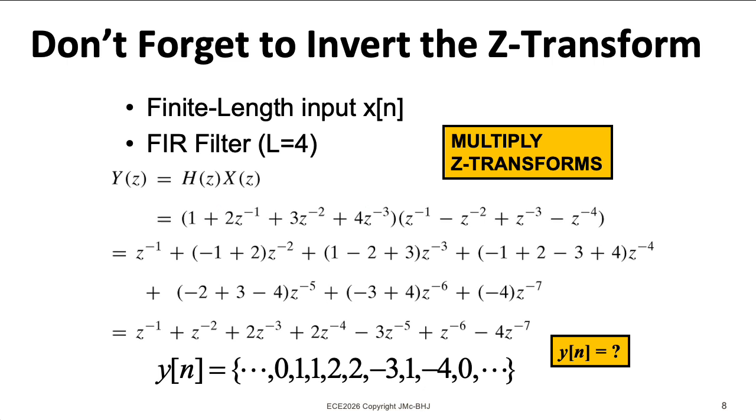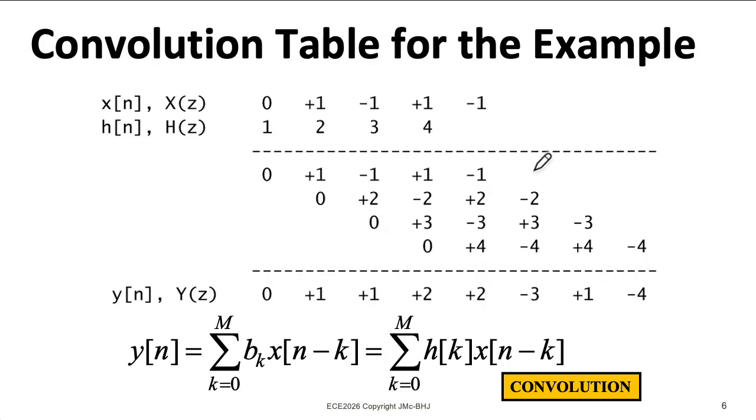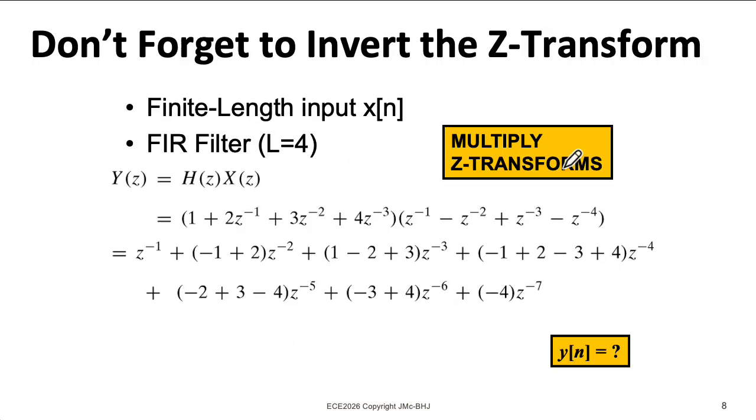So we see that convolution and polynomial multiplication are computationally equivalent. I personally don't find slogging through all of this algebra to be any easier than setting up the convolution as a table and working it this way. I personally find doing this algebra to be more error-prone, but your mileage may vary.